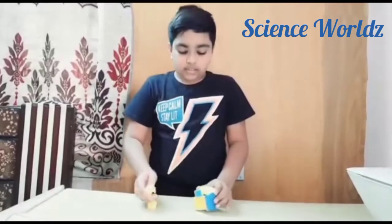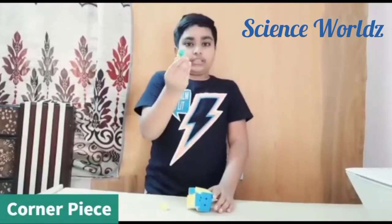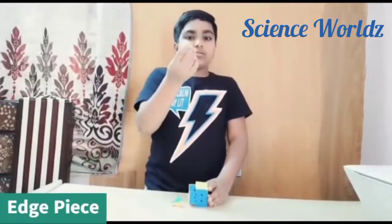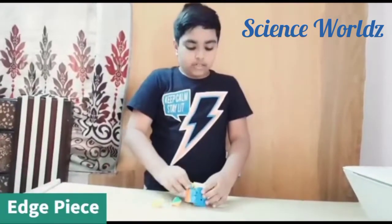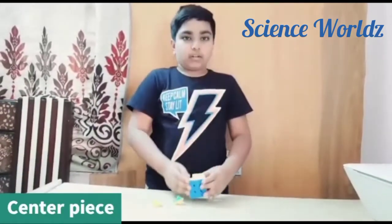There are three types of pieces. The first one is the corner piece. It has three colors on it. The second one is the edge piece. It has two colors on it. And the third one is the center piece. It has only one color on it.